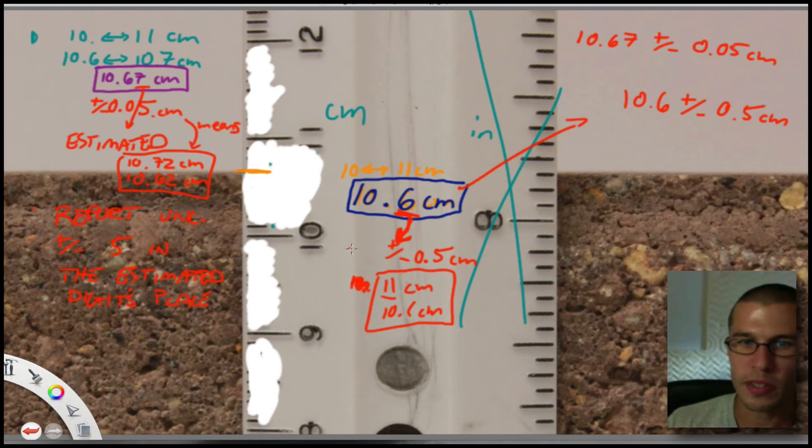Okay, I hope this helps in clarifying what you report as your uncertainty in that last digit. And as I said before, if you're using a digital scale, this five becomes a one.